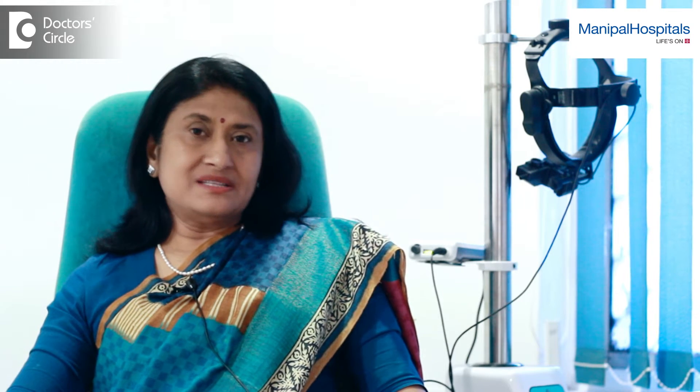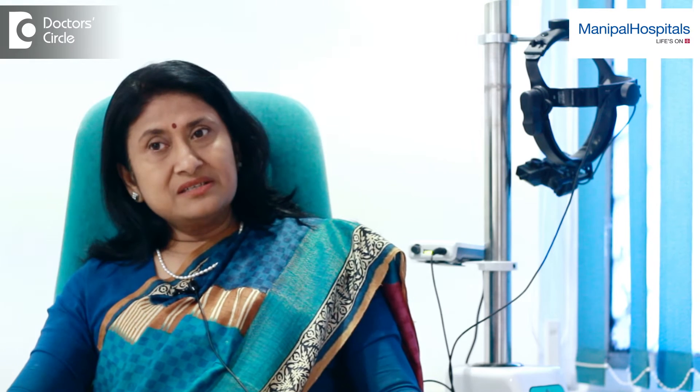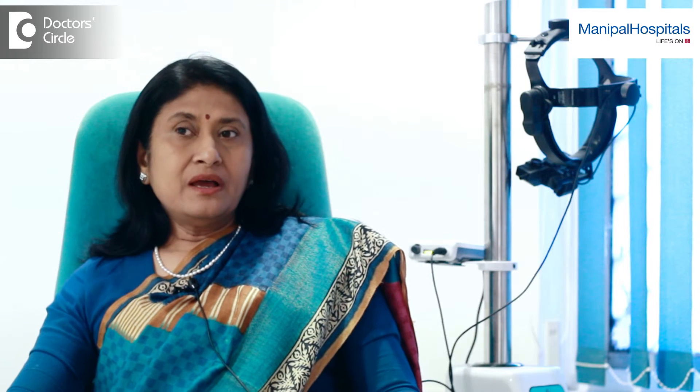The most important and the most common cause of cataract is age. Just like a person ages and you get graying of hair, hardening of blood vessels, a cataract can develop in the eye. It's very common in the age group more than 65 years. In India it starts a little bit earlier, but in western countries above the age of 70 most people have some amount of cataract. And it is the leading cause of preventable blindness in the world.